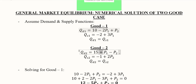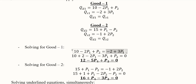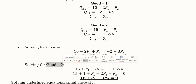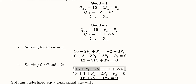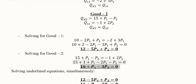Coming back to the solution process: we equate demand and supply for both goods. For good one, setting qd1 equal to qs1 and solving gives a simplified equation. In the same way, for good two we set qd2 equal to qs2 — you can pause the video to verify — and simplify these expressions to get a final equation in terms of p1 and p2.